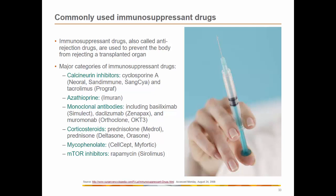Calcineurin inhibitors include cyclosporine and tacrolimus. Their main action is to block T-cell transcription — the process required for production of cytokines by the inflammatory cascade — thereby inhibiting T-cell proliferation and activation. Cyclosporine is most commonly used in heart and lung transplantation and can be given alone but is usually combined with other drugs such as prednisone and azathioprine. Tacrolimus is the most commonly used drug in kidney, liver, pancreas, and small bowel transplantation, and may be started at the time of transplantation or days after the procedure.